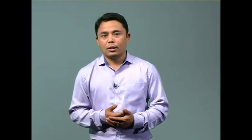Endoplasmic reticulum can be rough or smooth depending upon the presence of ribosomes on its surface. The rough endoplasmic reticulum has a granular or rough appearance as ribosomes are bound to their outer or cytoplasmic surface, while smooth endoplasmic reticulum has no ribosomes on its surface, making it look smooth.